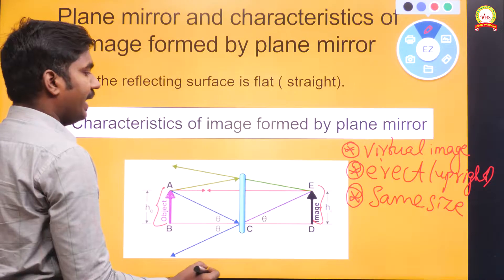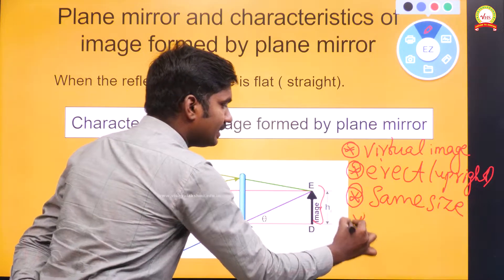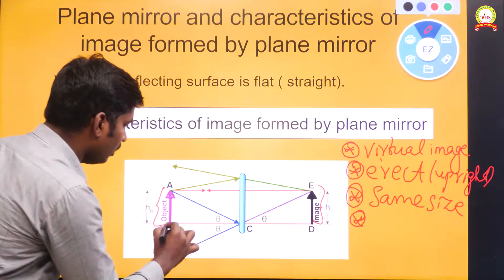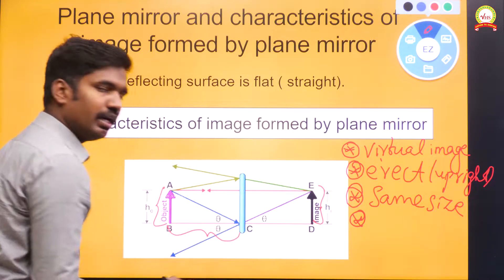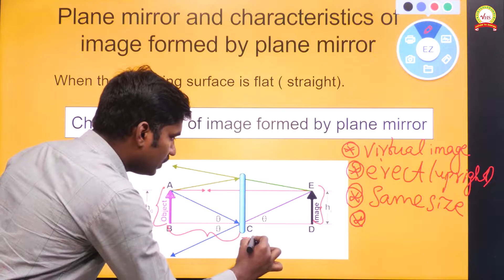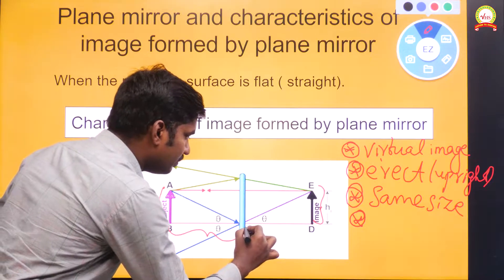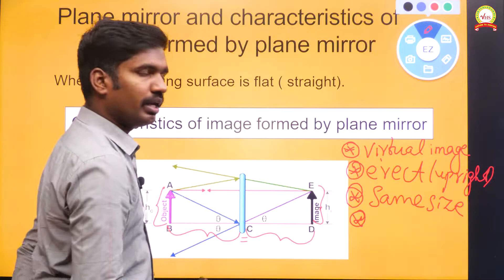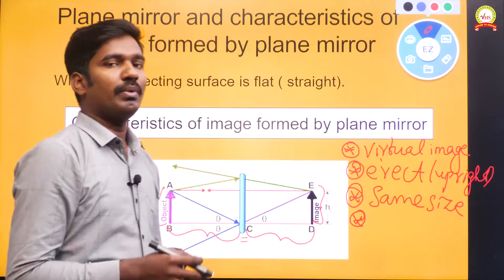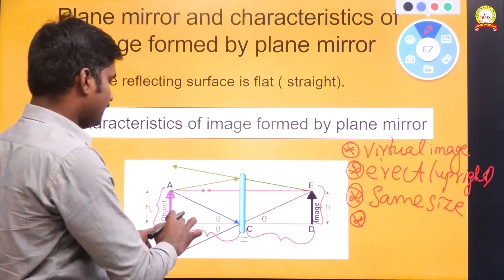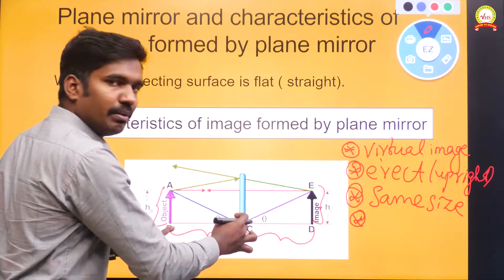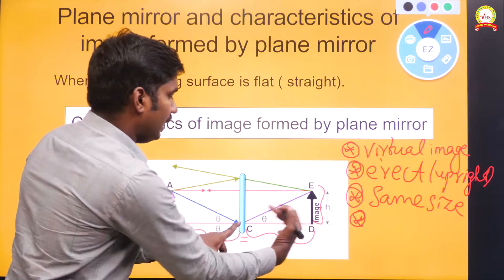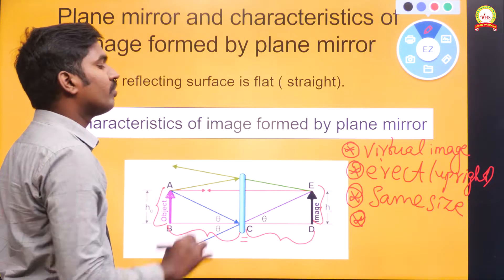The next characteristic is about distance. The distance between the object and the mirror is equal to the distance between the image and the mirror. It will be in the form of equal distance — the distance between the object and the mirror is equal to the distance between the image and the mirror.